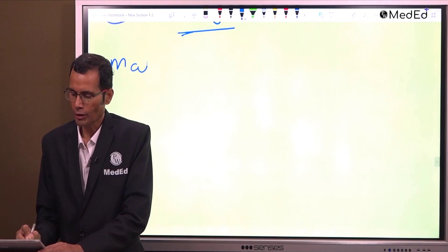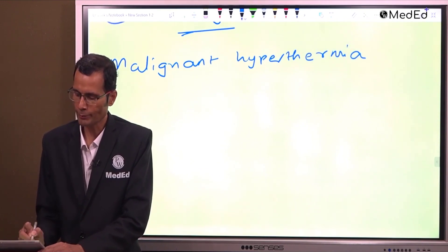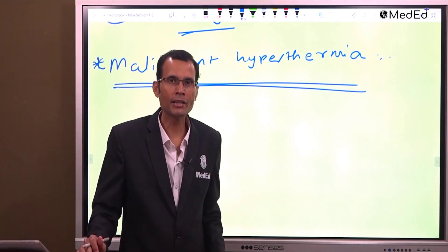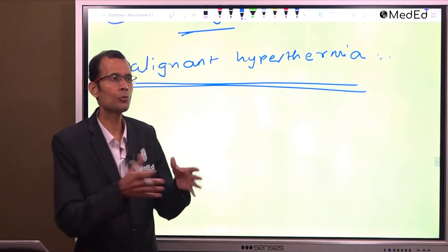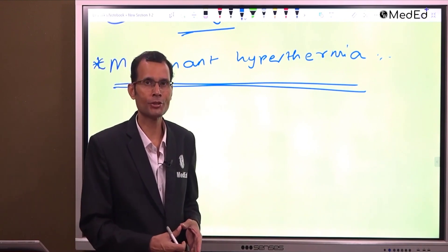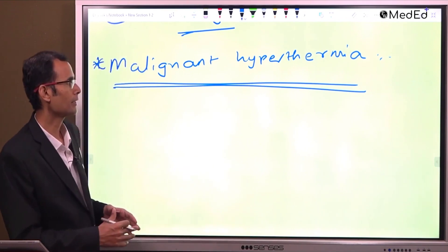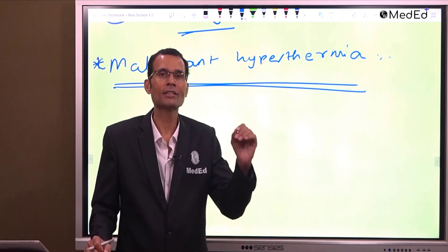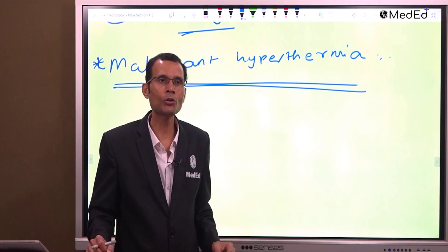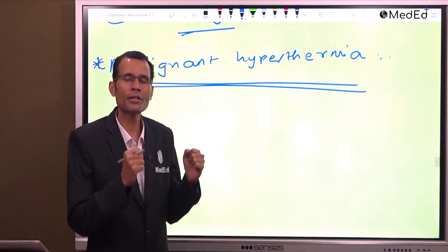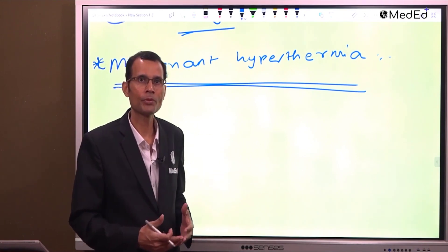We are most interested in malignant hyperthermia. Although it mentions 'malignant,' it does not necessarily mean a cancerous condition — similar to malignant hypertension. Hyperthermia means excessive heat generation, here because of excessive muscle contraction. You may have seen chills and rigors — oscillatory muscle contractions — which generate heat in the body. Something similar happens here.